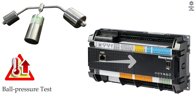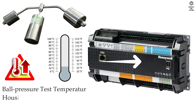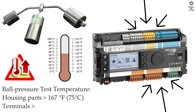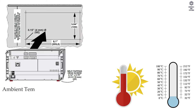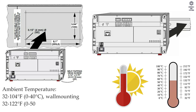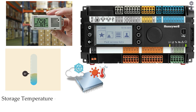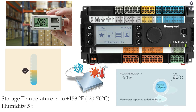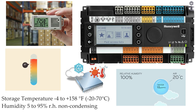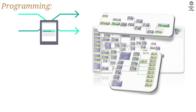Ambient temperature — ball pressure test temperature: housing parts greater than 167°F, terminals greater than 257°F. Operating range: 32 to 104°F for wall mounting, 32 to 122°F for cabinet door mounting. Storage temperature is minus 4 to plus 158°F. Humidity is 5 to 95% RH non-condensing.